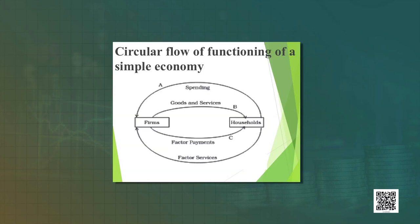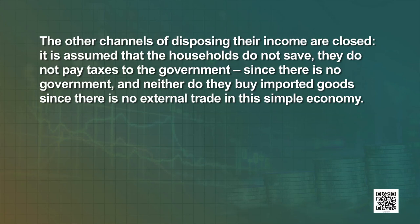You can see in the diagram and understand the circular flow of functioning of a simple economy, which is facilitated through the market. It enables us to have a rough idea of how a simple economy without a government, external trade, or any savings may function. In this simplified economy, there is only one way in which the households may dispose of their earnings — by spending their entire income on the goods and services produced by the domestic firms.